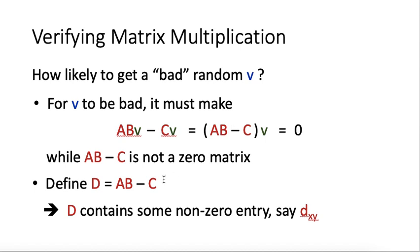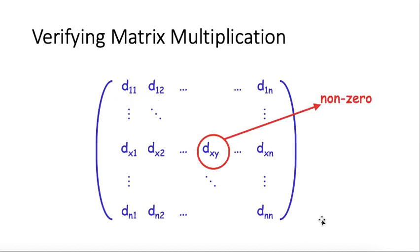To ease our discussion, let us define D to mean this AB minus C matrix. D must contain some non-zero entry because AB is not equal to C to begin with. Let's call it DXY. This is the matrix of big D. It has many entries, it's N by N matrix, and it must contain at least one non-zero entry. Let's call it DXY for our analysis purpose.